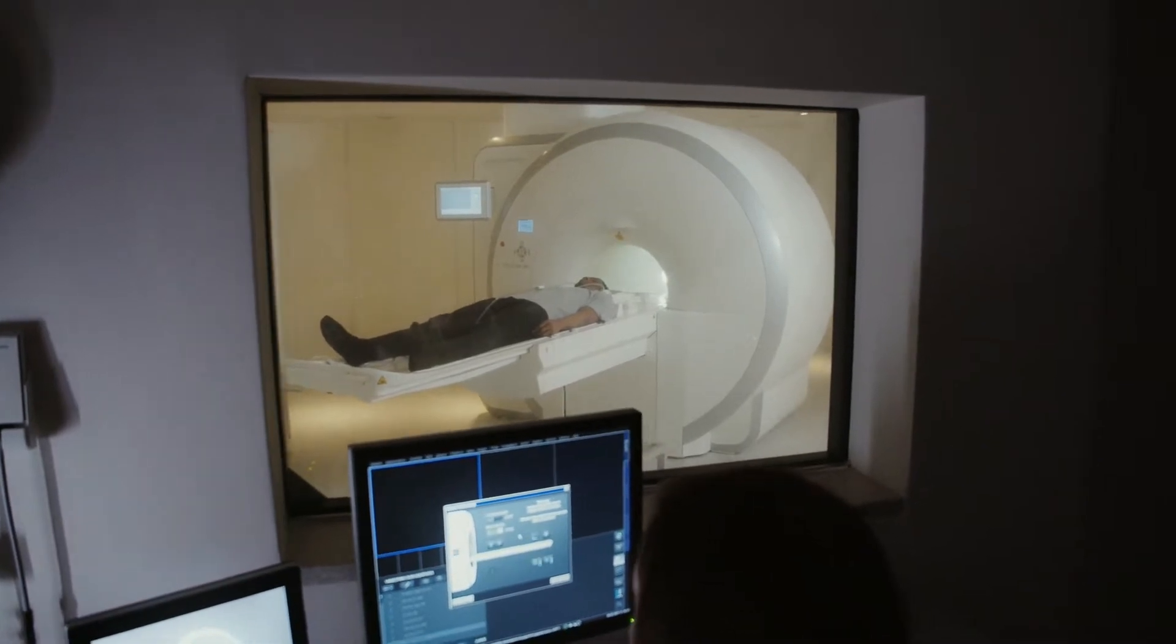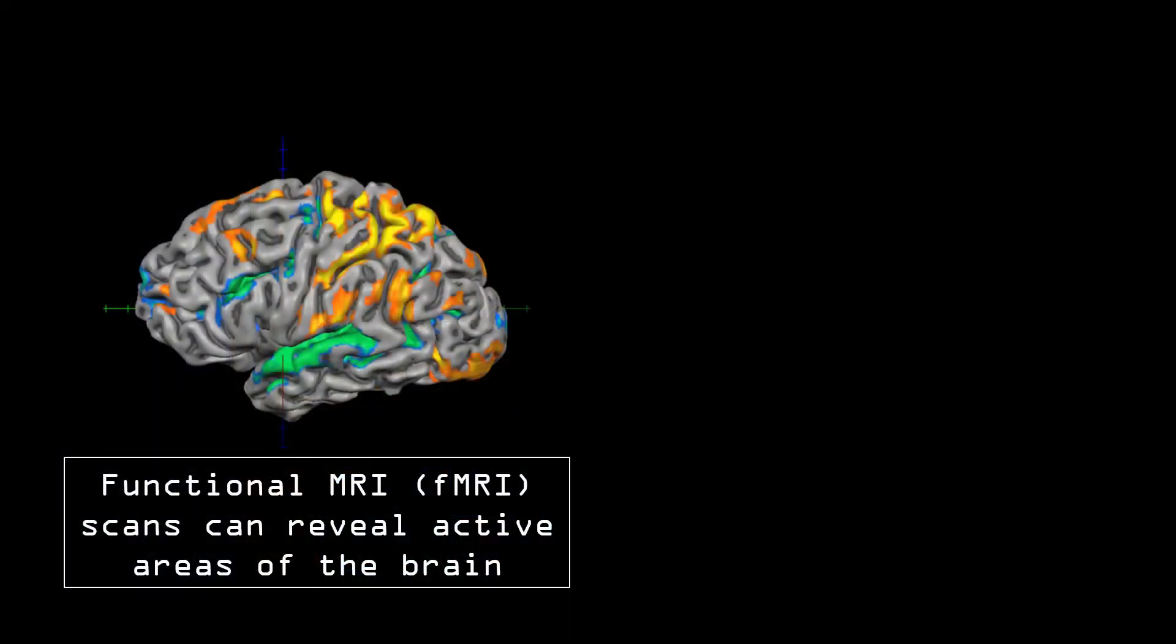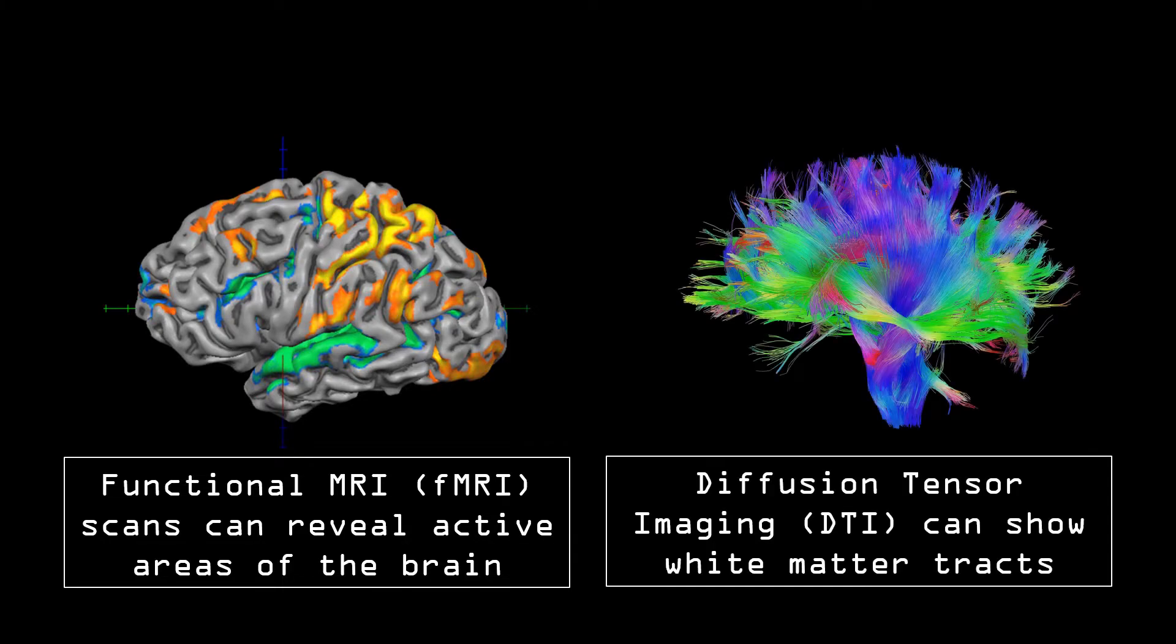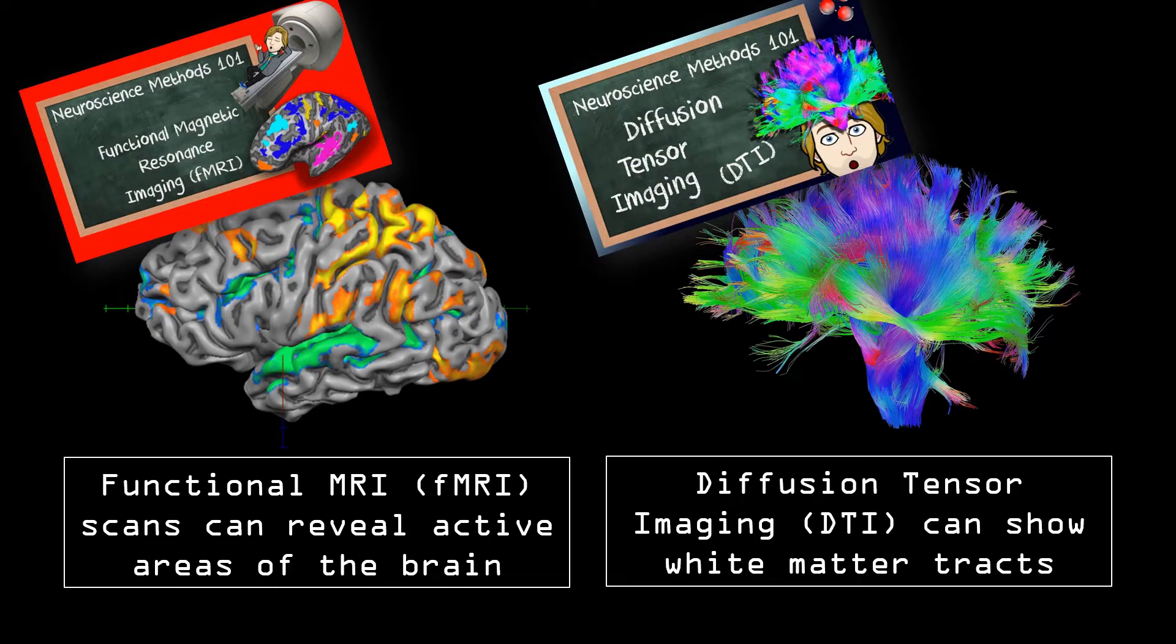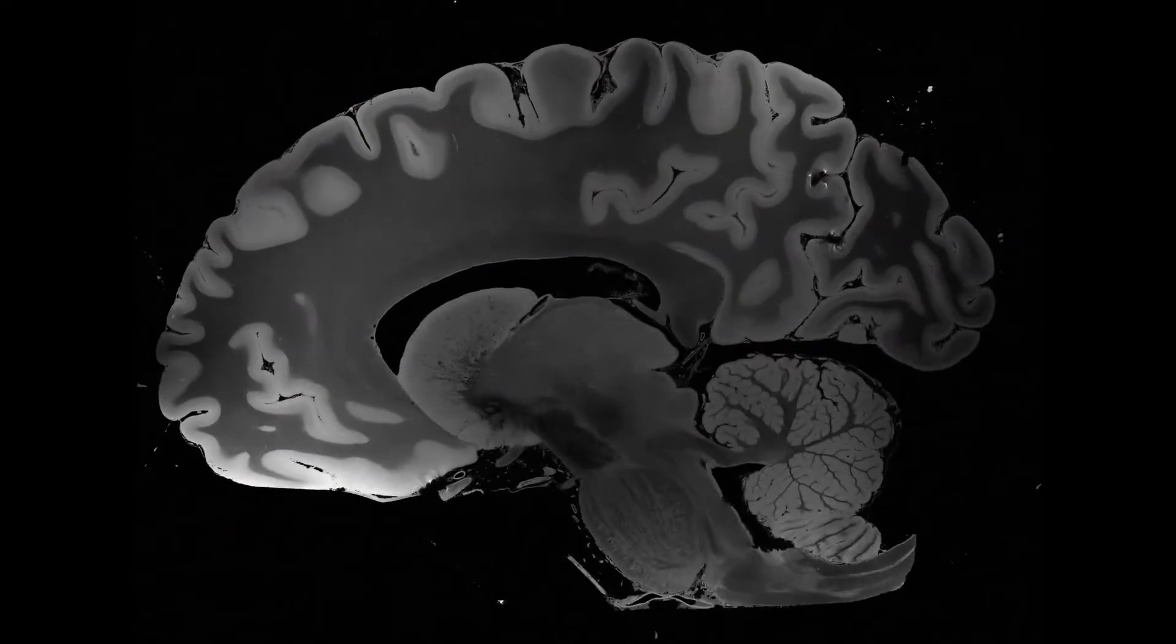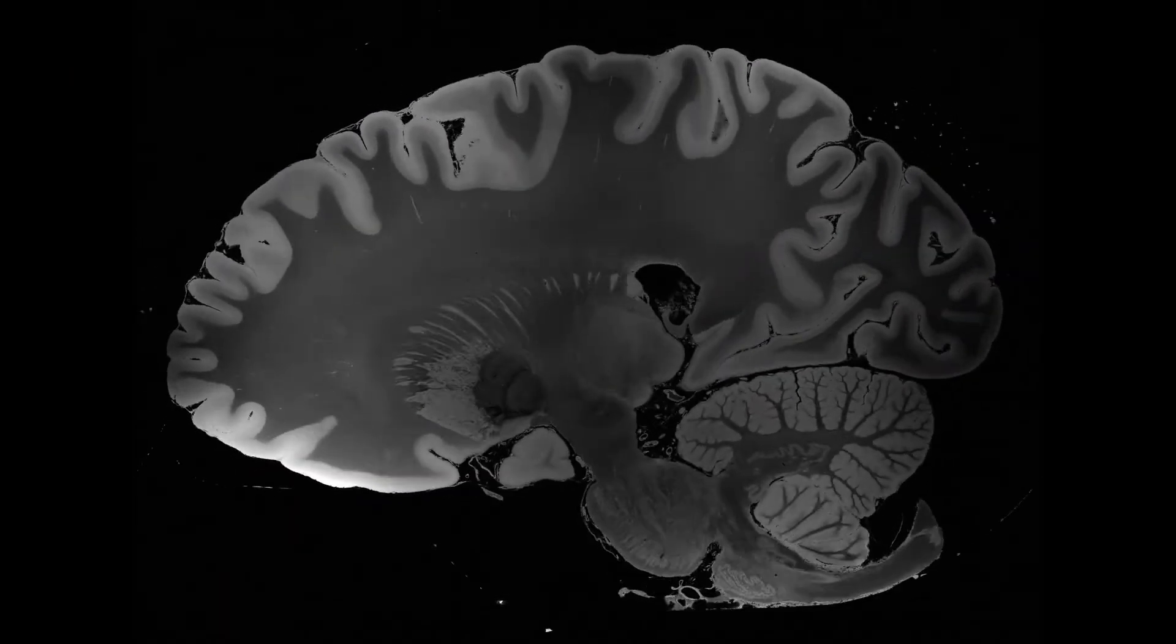Now you can do a lot of things with an MRI scanner, such as measuring brain activity or looking at where all nerve fibers are going, but the most common use is to make a structural MRI scan. So let's take a look at how that works.